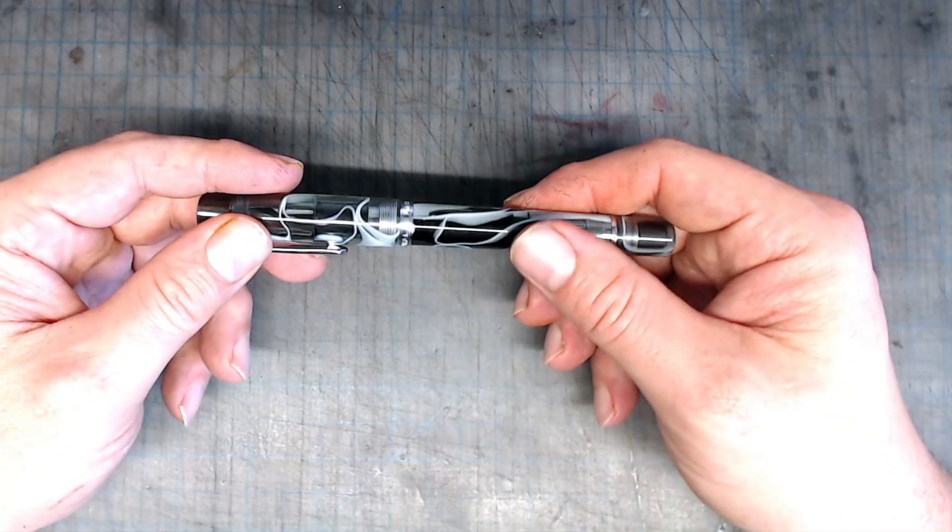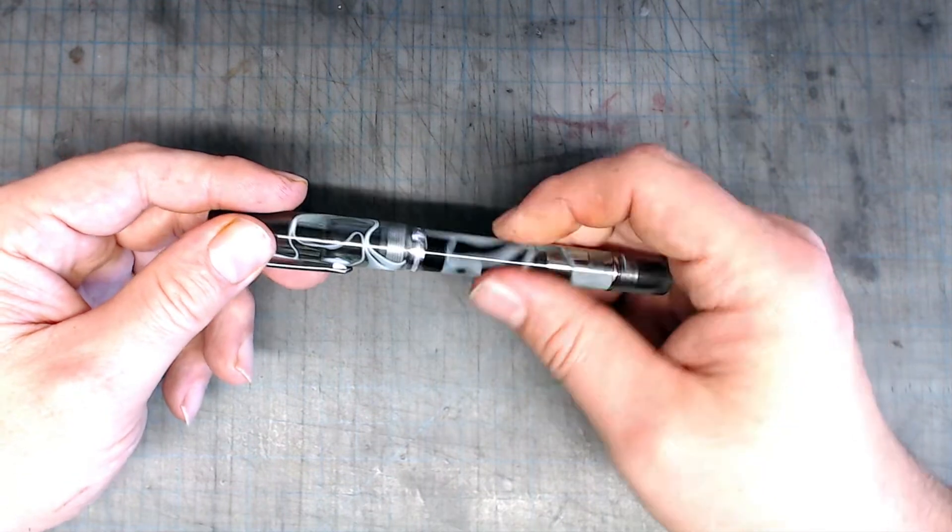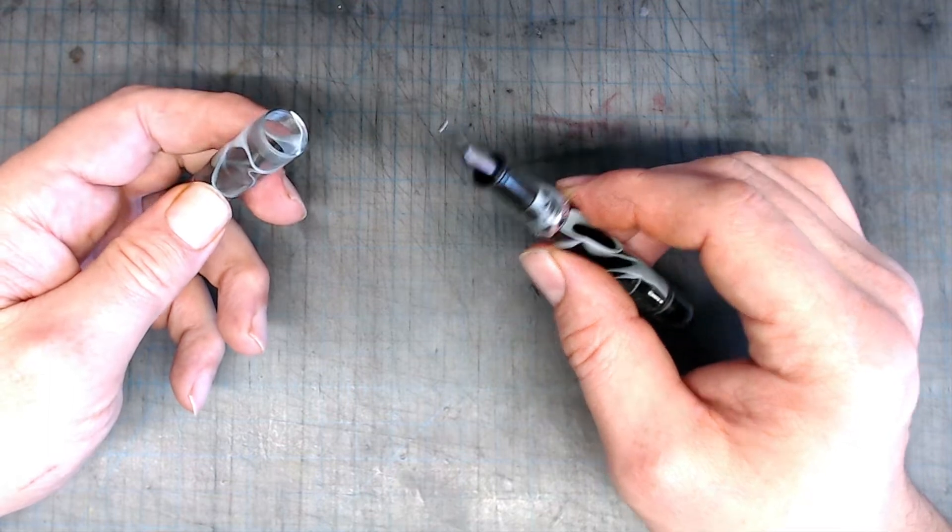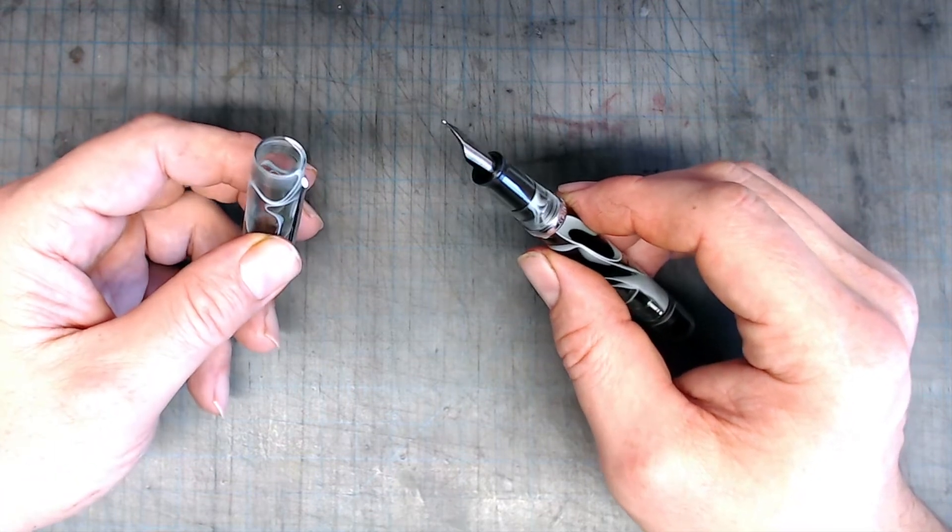The cap has a narrowing at the end that seals off the nib which is great because it keeps the nib from drying out. Because of this feature I find this pen starts right away even when not used for several weeks.